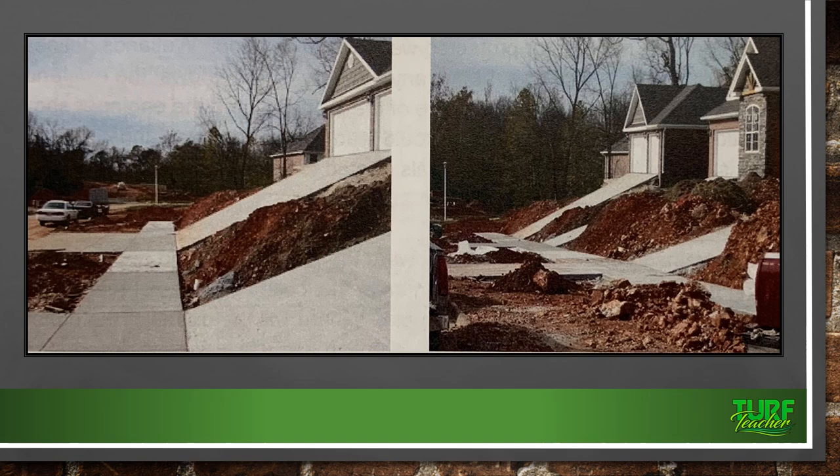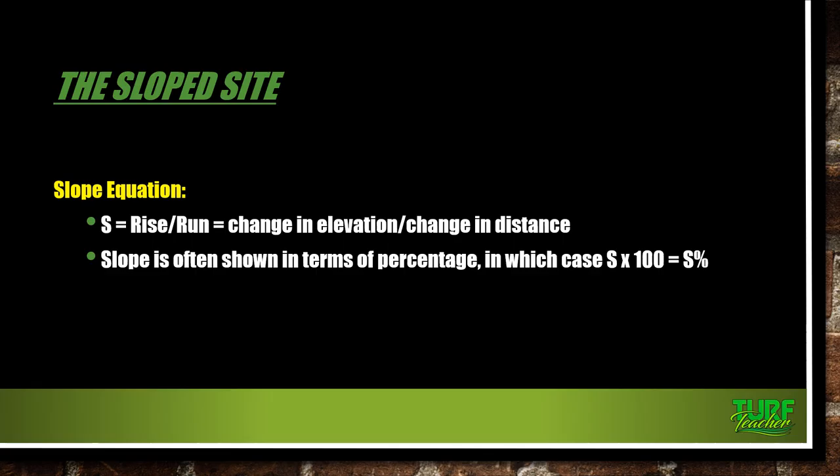This was poor planning from the start. The builder had to have known this was going to happen and should have removed a lot of this soil. I feel sorry for the homeowners. The slope equation: slope equals rise over run — the change in elevation over the change in distance. Slope is often shown as a percentage where S × 100 equals the slope percentage. The minimum slope away from a house should be 2% on mulch and turf grass, and minimum 1% on paved surfaces.